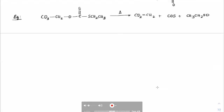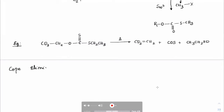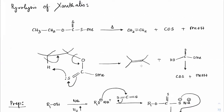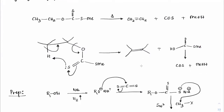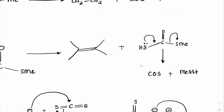Next is cope elimination. When a tertiary amine oxide undergoes elimination: for instance, CH₃CH₂–N⁺R R'–O⁻ on heating gives CH₂=CH₂ plus RR'N–OH. A cyclic transition state forms: oxygen extracts the beta hydrogen, the C–N bond breaks, and the double bond forms.